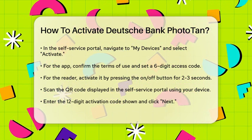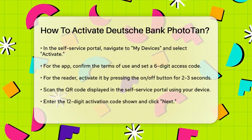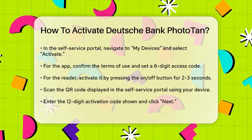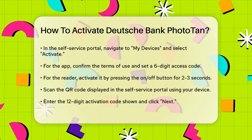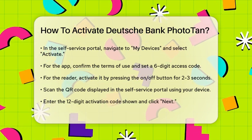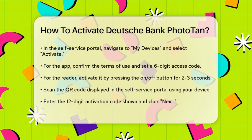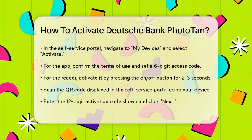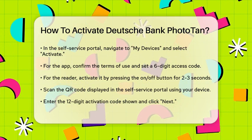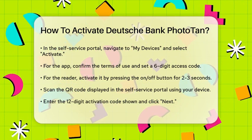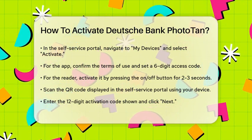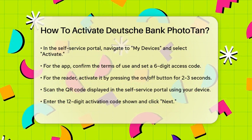Now scan the QR code displayed in the self-service portal with your smartphone or reader. Enter the 12-digit activation code that appears and click Next. In the app, confirm the input by clicking Activate Token.